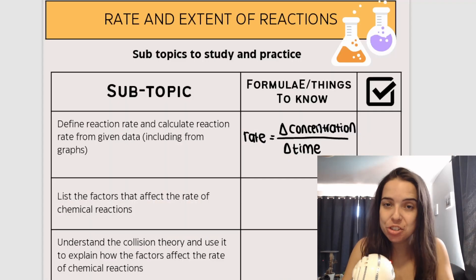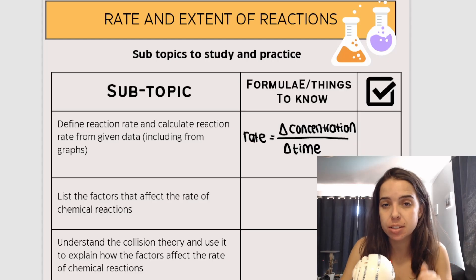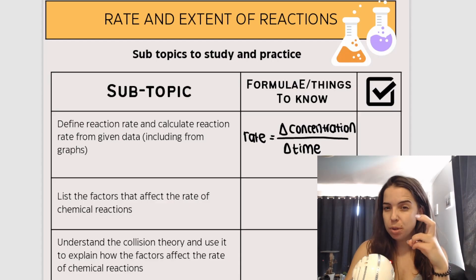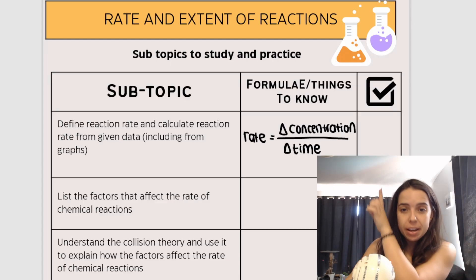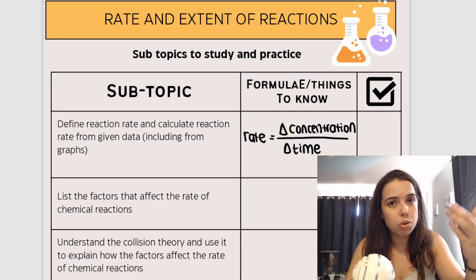Our next topic is for all the chemistry lovers out there. It is rates and extent of chemical reactions. Now again, this is a new topic, but it builds a lot on things that you've already learned in grade 10 and in grade 11. So I've broken down the subtopics. There's a new formula that you need to learn. Although beware, this formula is not given on your data sheet. You need to be able to just look at the question and know how to apply the formula.